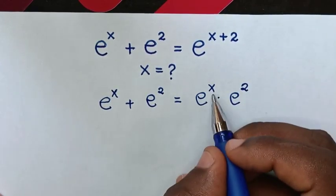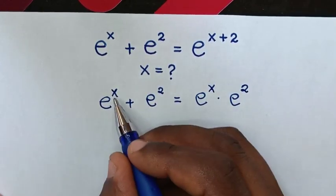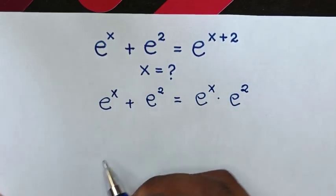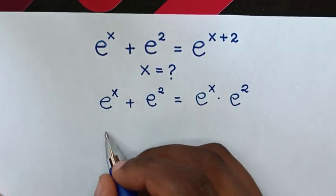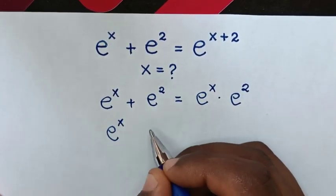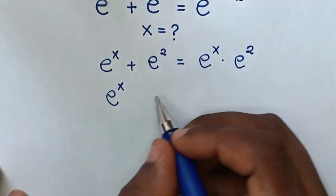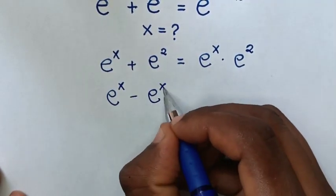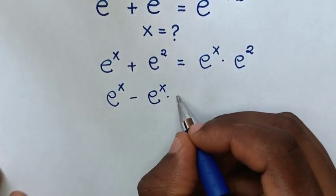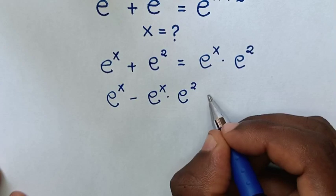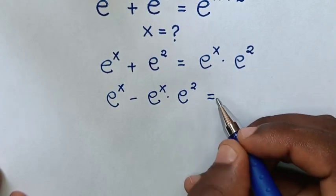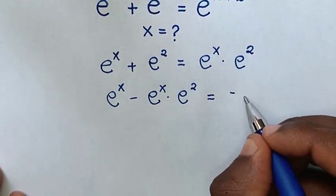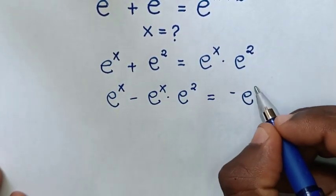We collect the e power of x terms on one side. Taking this term to the left side, it becomes e power of x minus e power of x times e power of 2. Then we take e power of 2 to the right side, giving negative e power of 2.